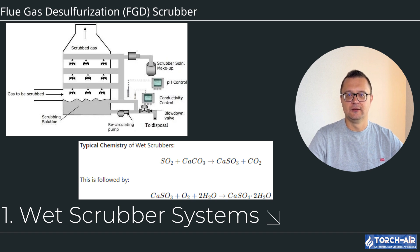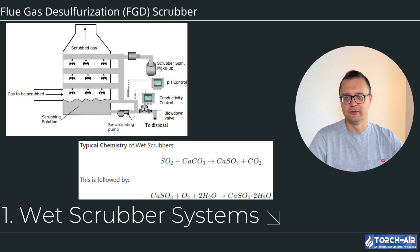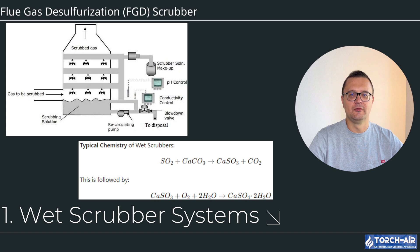In the reaction tanks, the reaction between SO2 and the alkaline slurry forms calcium sulfite (CaSO3), which can be further oxidized to form gypsum (CaSO4·2H2O), a byproduct that can be sold for use in construction materials. Mist eliminators help remove any entrained liquid droplets before the cleaned gas exits the system. The cleaned flue gas, now free from most of its sulfur dioxide, exits through the exhaust stack. Typical chemistry of wet scrubbers is shown on screen.